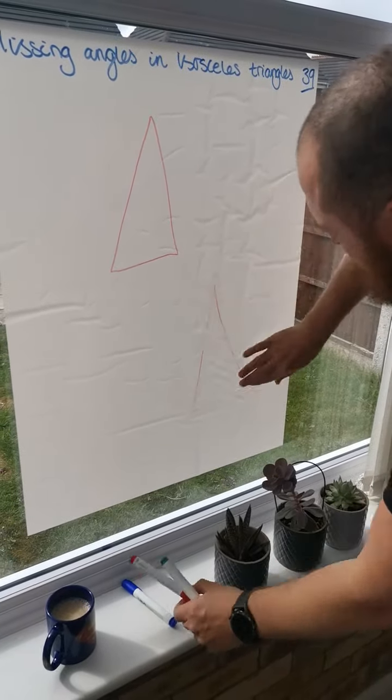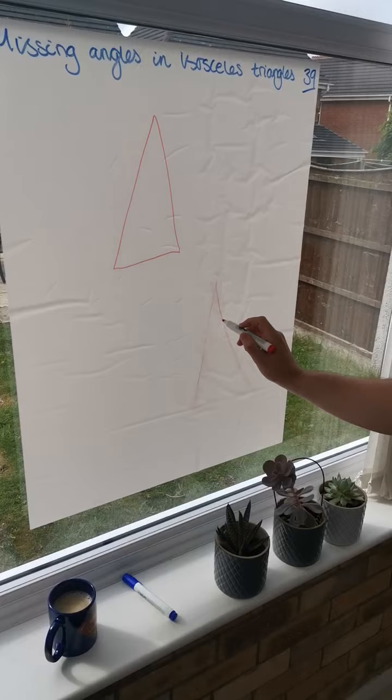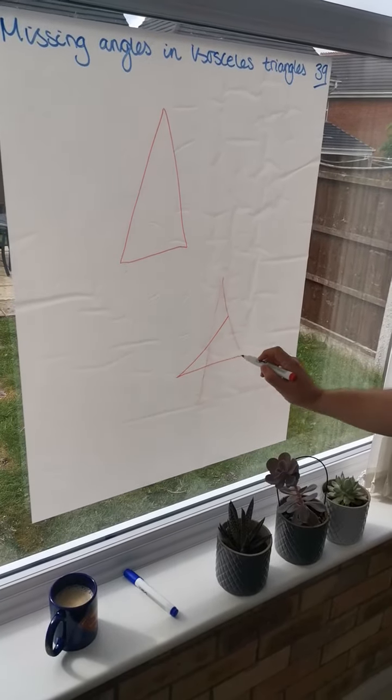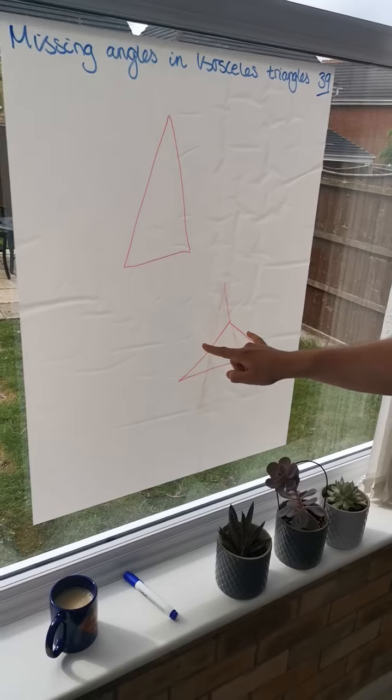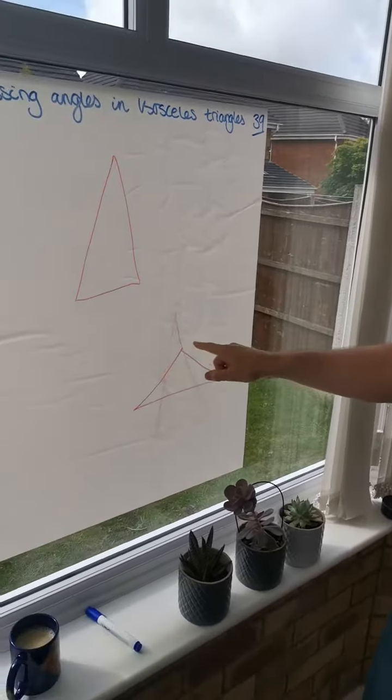What we'll do is we'll get rid of that, actually. Still an isosceles triangle because these two sides are the same. Not an equilateral because not all three are the same.